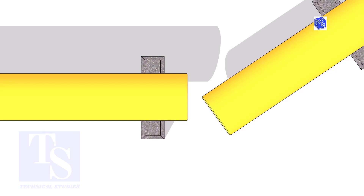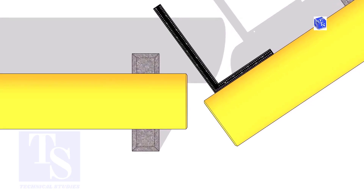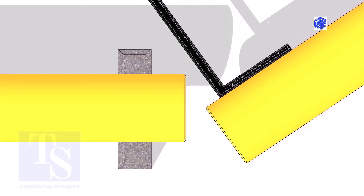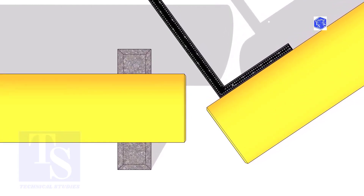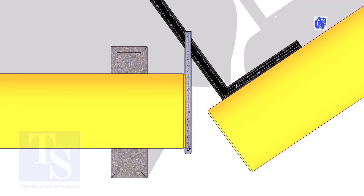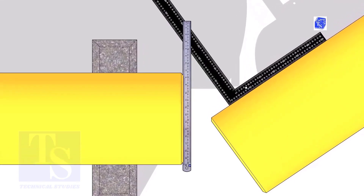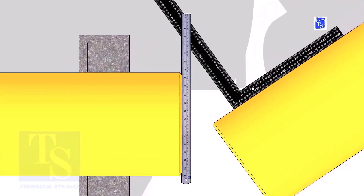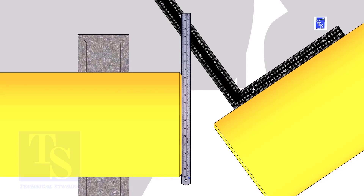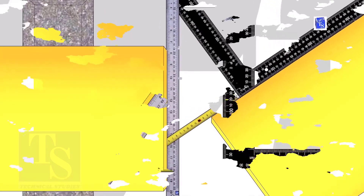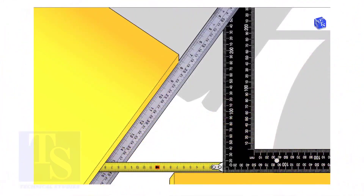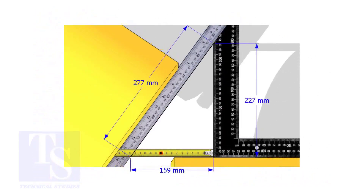Hold a right angle on the pipe as shown. Hold a scale on the other pipe as shown. Measure and note down the dimensions of the triangle. Assume that these are the dimensions.